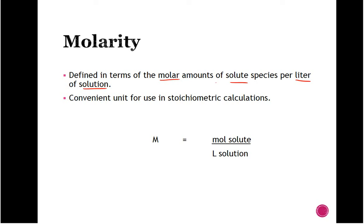We tend to use molarity a lot because it's convenient, but there is a problem: molarity is dependent on volume, and volume adjusts with temperature. If you increase temperature, the molecules move and sit differently; if you decrease temperature, they move and sit differently. So molarity is a temperature-dependent concentration — it may be slight, like 0.01 or something, but it does matter.